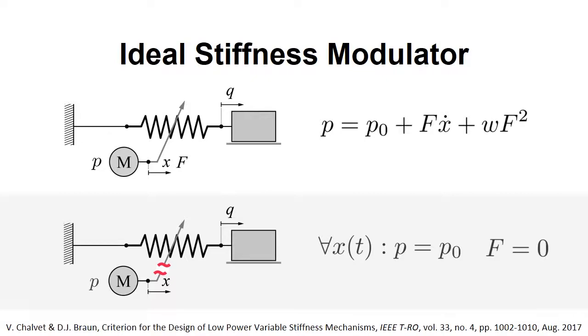To address this question, we first define the ideal stiffness modulator. According to our definition, the ideal stiffness modulator is one where the power consumed by the motor during stiffness modulation is the same as the power consumed by the motor when decoupled from the stiffness modulator. This definition implies that for the ideal actuator, the motor doesn't feel the elastic force imposed by the stiffness modulator.